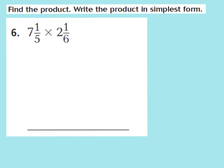Now let's take a look at question number 6. Our job is to find the product in simplest form. For question 6, they give us 7 and 1 fifth times 2 and 1 sixth. To multiply these mixed numbers correctly, we first turn them into improper fractions. I multiply 5 times 7 — denominator times whole number — which gives 35, then add the numerator 1: 35 plus 1 is 36. The denominator stays the same, so 7 and 1 fifth becomes 36 fifths.